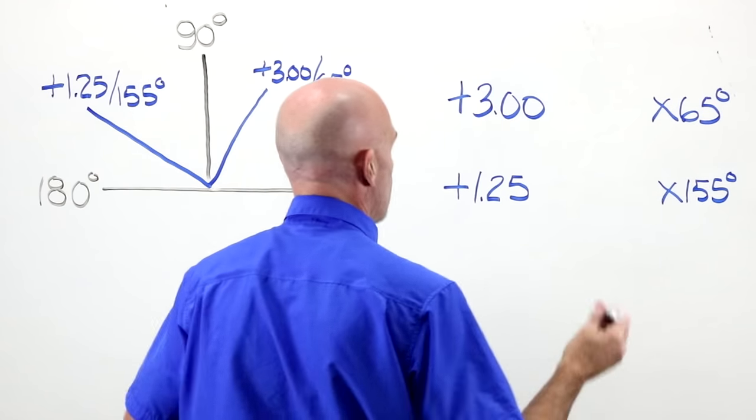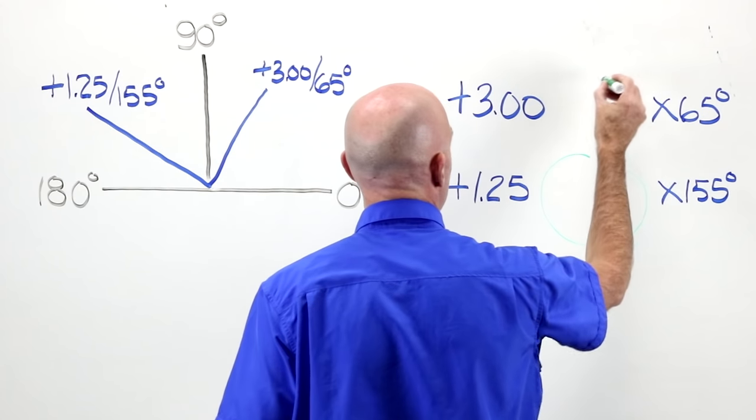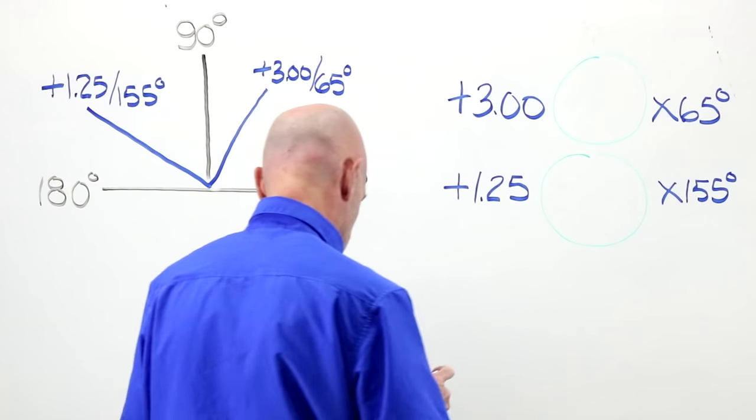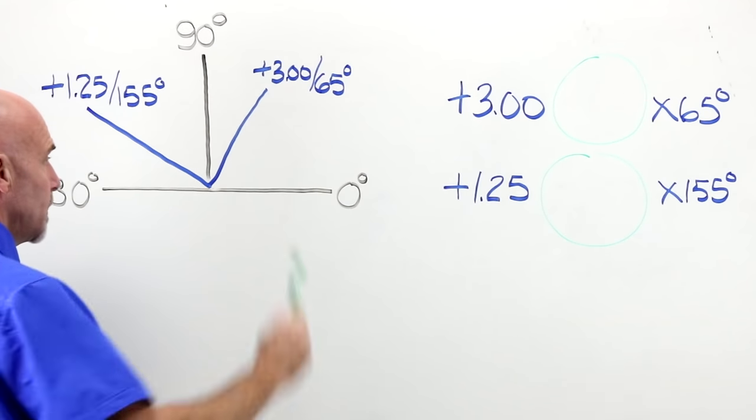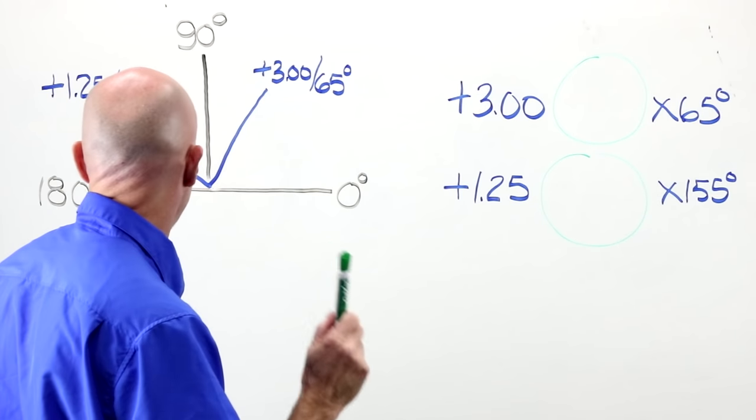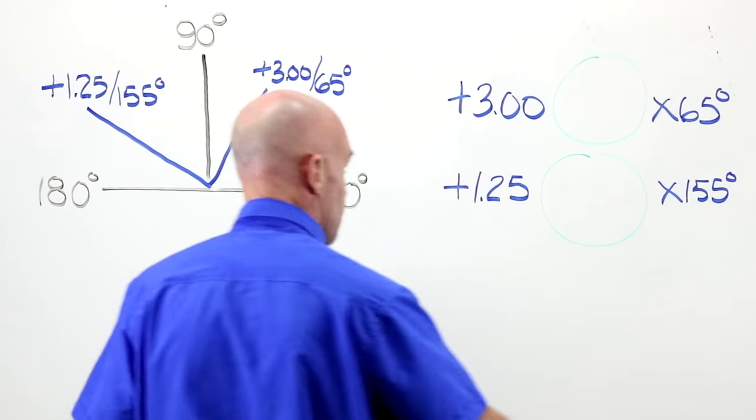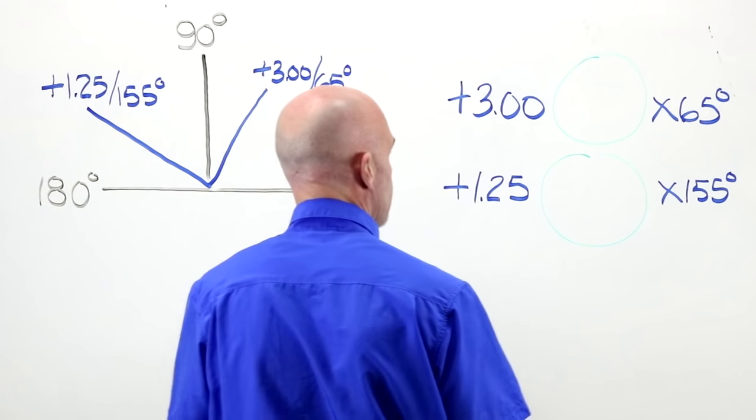We need to solve for our cylinder amount and our cylinder sign. Now, if I go from 125 to three, I've moved one and three-quarter diopters, 1.75.